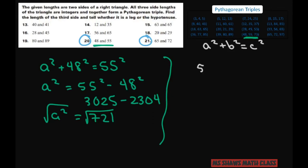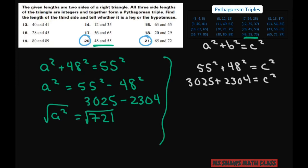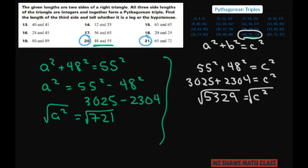Let's do 55² + 48² = c². Adding 2,304 + 3,025 gives 5,329 = c². Take the positive square root, and you get c = 73. So 73 is your hypotenuse.